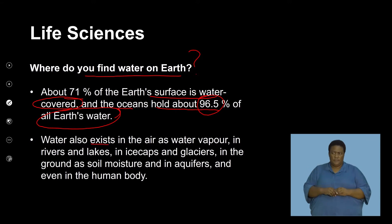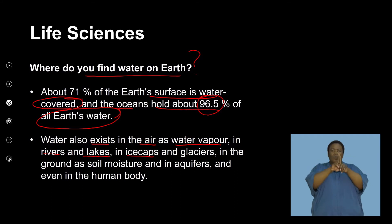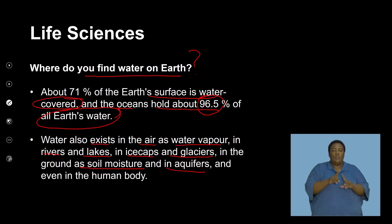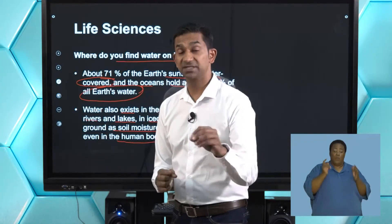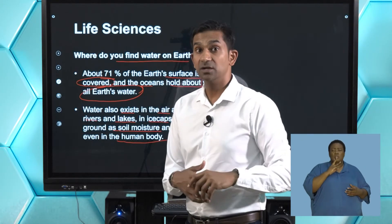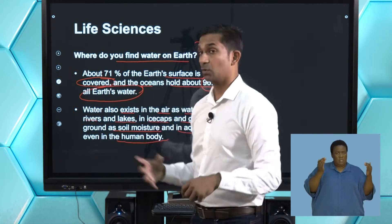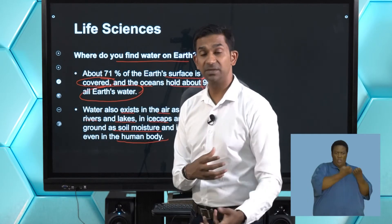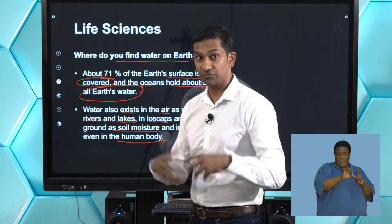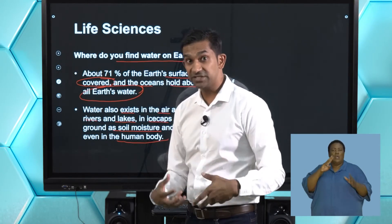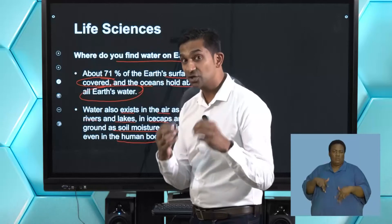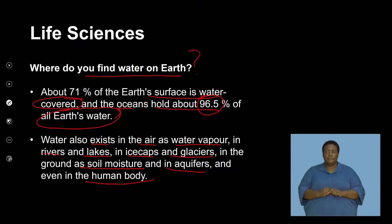Water also exists in the air as water vapor, in rivers and lakes, in ice caps and glaciers, in the ground as soil moisture and in aquifers, and even in the human body. A large percentage of our body — more than 70% — is made up of water, which is quite similar to the composition of water on Earth. Water is fundamentally important for us as humans to survive from a physiological perspective.